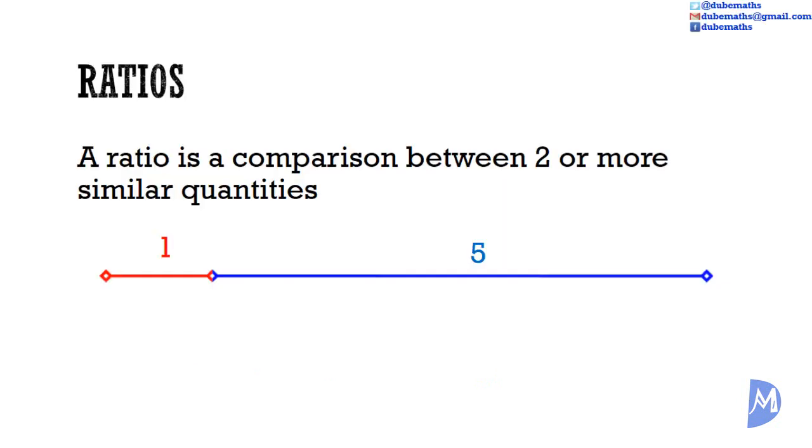Ratios. A ratio is a comparison between two or more similar quantities. Here we see that the blue line is 5 times as large as the red line.